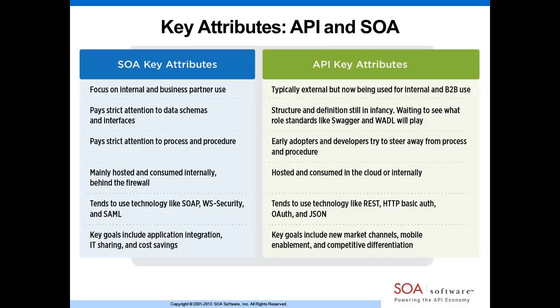If we switch over to API technology — shown in green on the right — you can see some key attributes. Whereas SOA is typically internal, API is typically external, though it doesn't have to be. Structure and definition are still being worked out; it's often about quickly getting things out to drive business initiatives. It's often externally hosted and uses different technologies than SOA — things like REST, OAuth, and JSON.